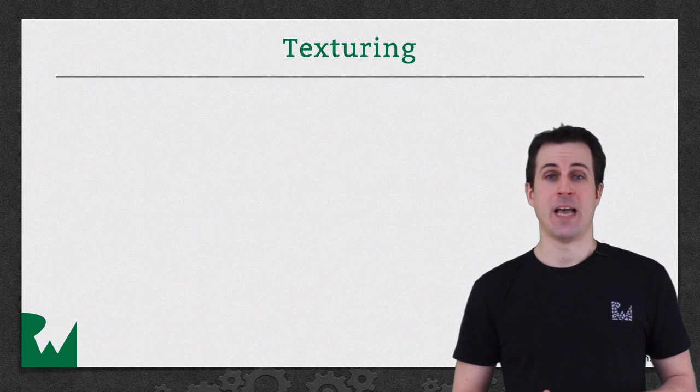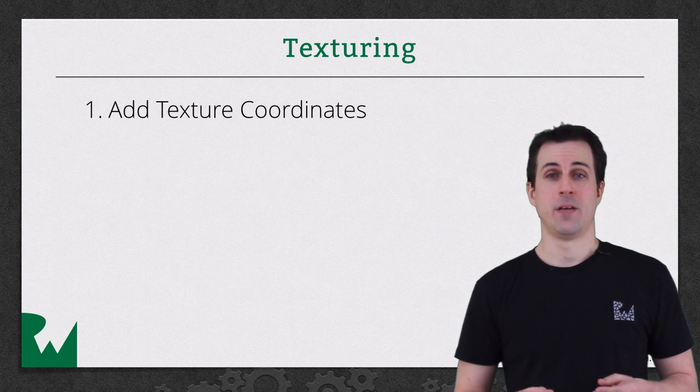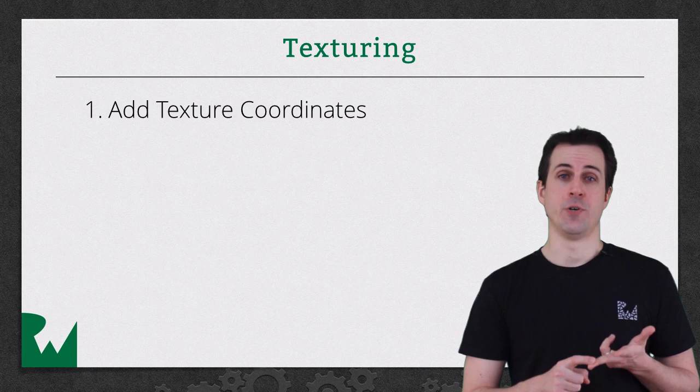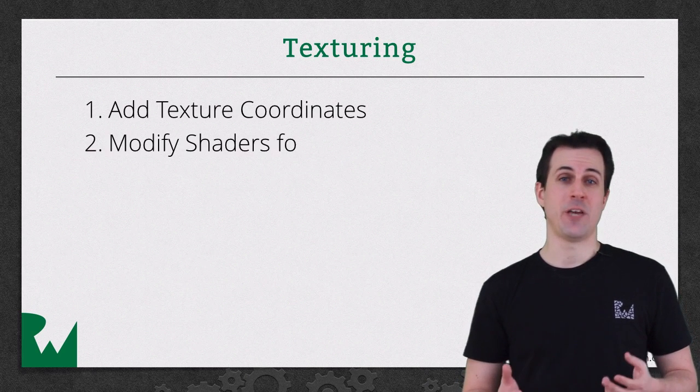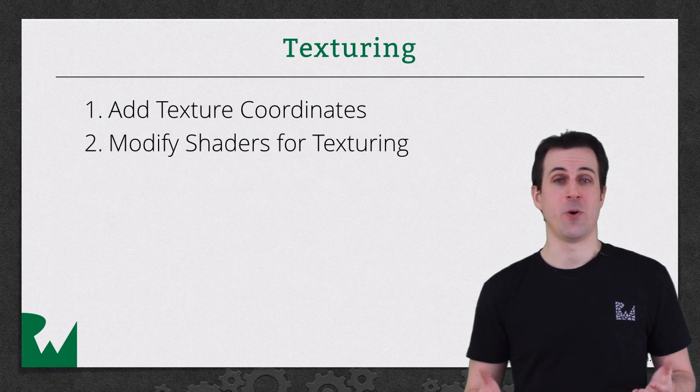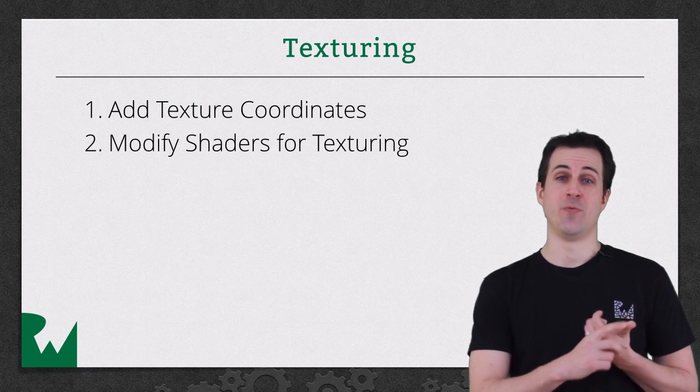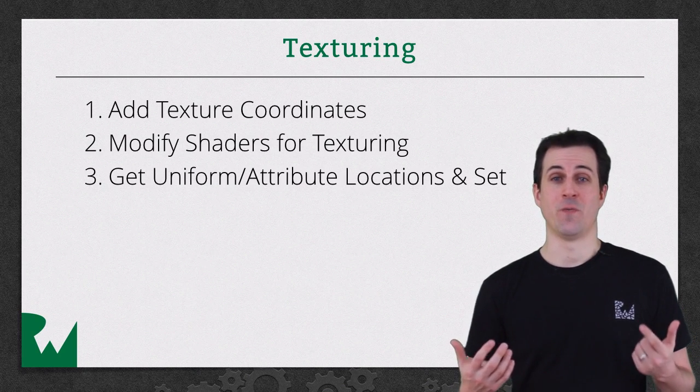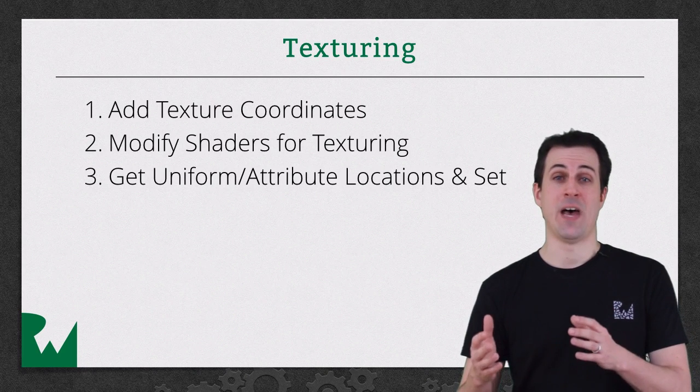The first thing is you need to add a new texture coordinate to your vertex structure. So far, you have position and you have color, where you're going to add one more, which is the texture coordinate. The next thing you need to do is modify your shaders to add texturing support. It's actually just a few lines of code, and we'll go over that in a few minutes. After that, your shader will now be taking a new vertex attribute and a new uniform. So just like you've done several other times in this series so far, you're going to figure out the locations of these so you can set the values through.